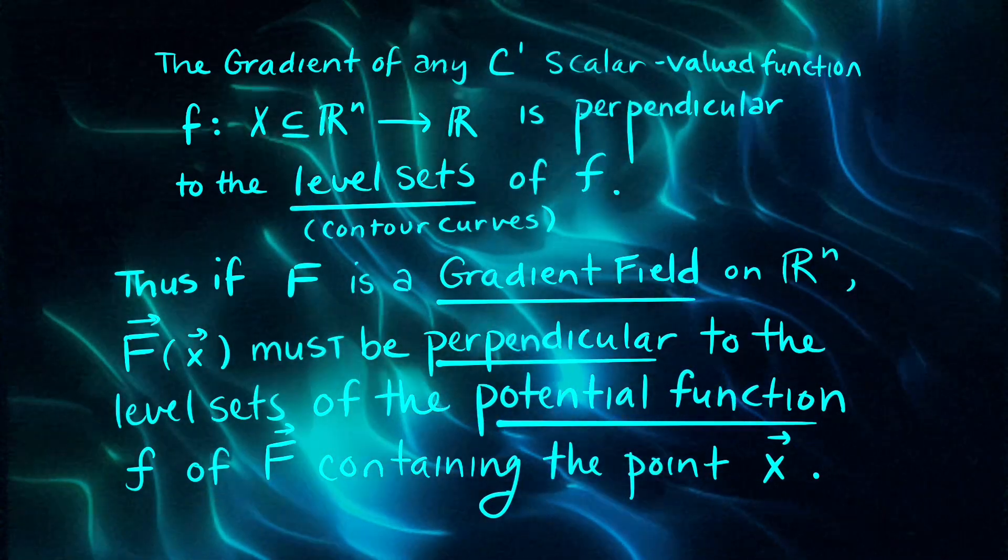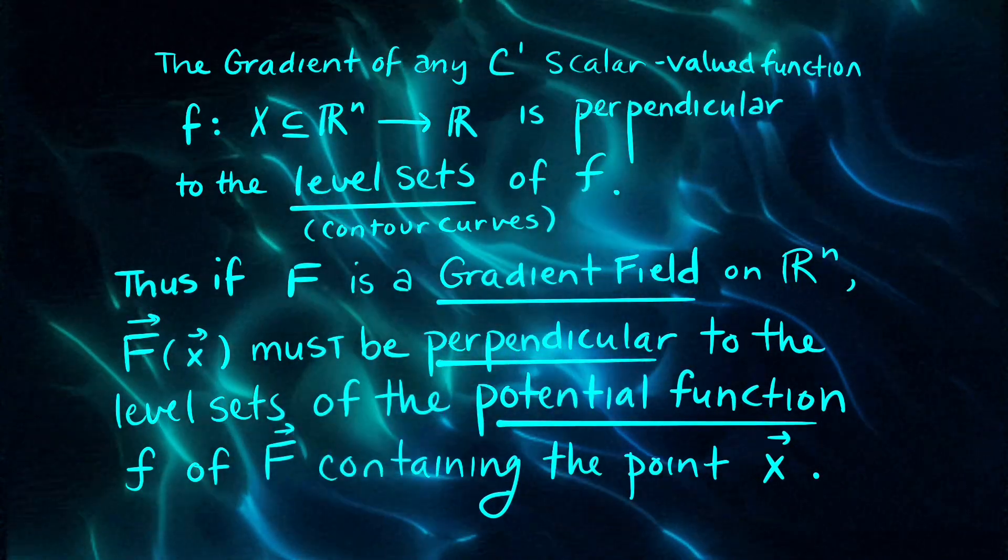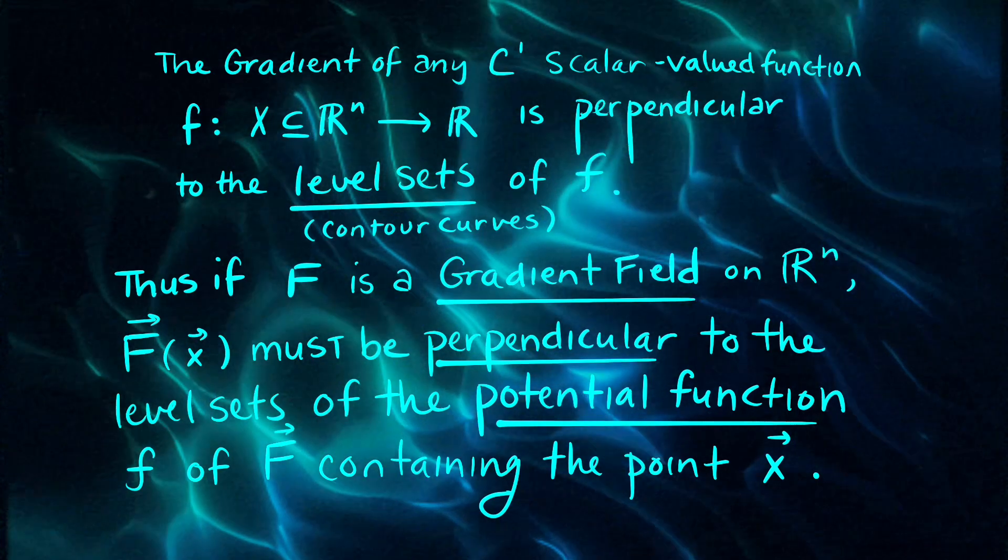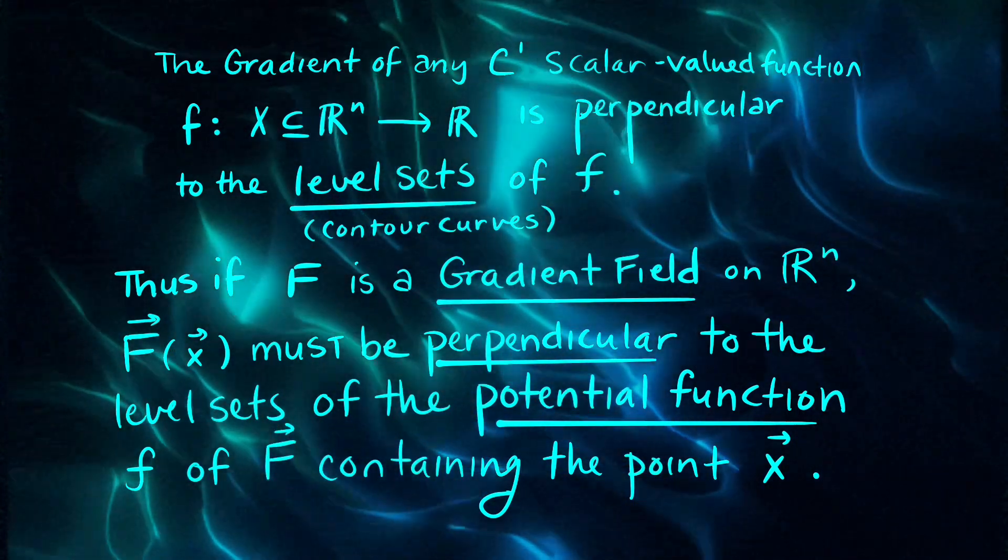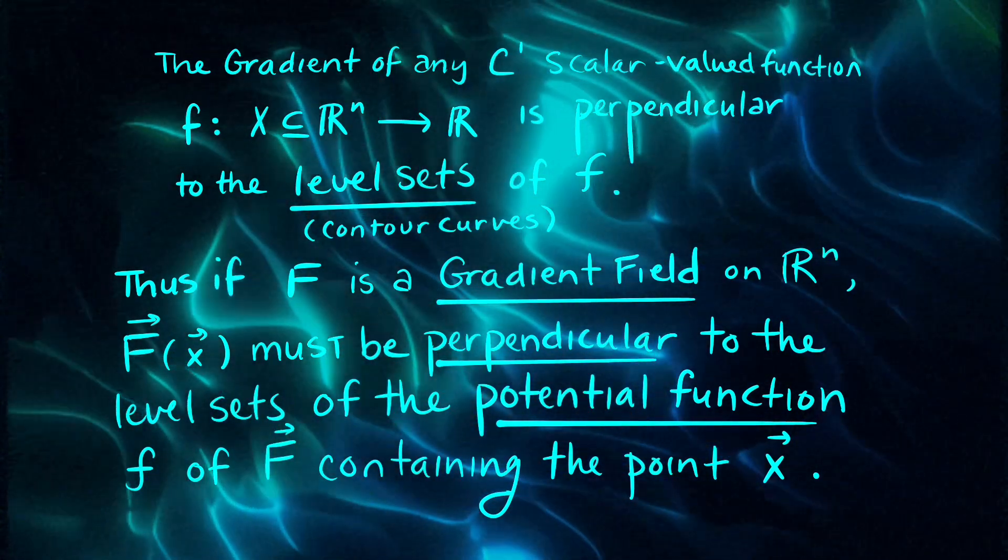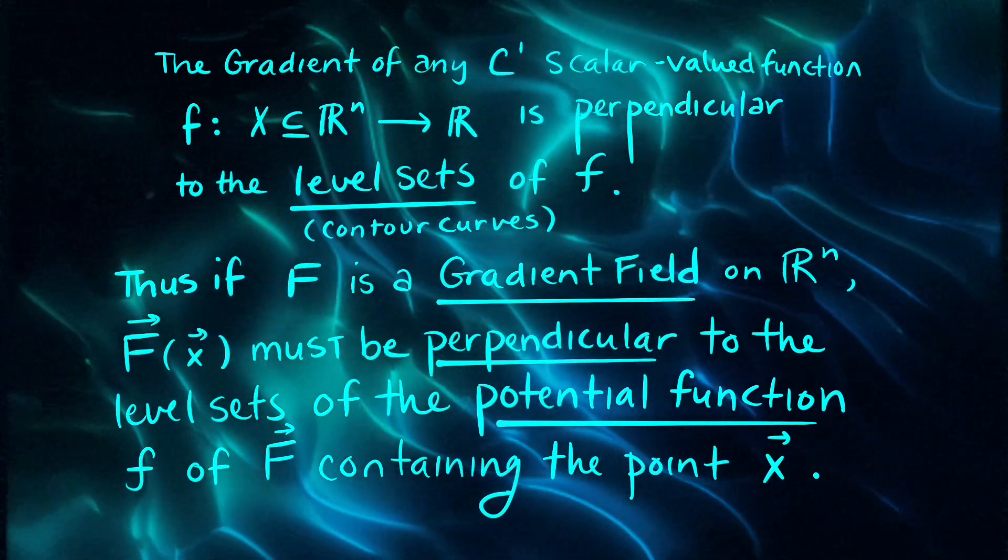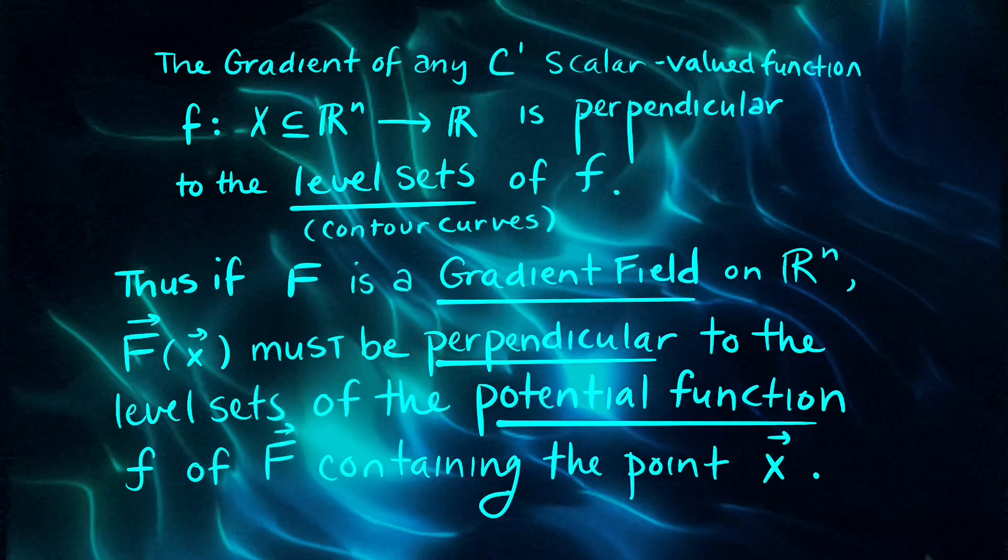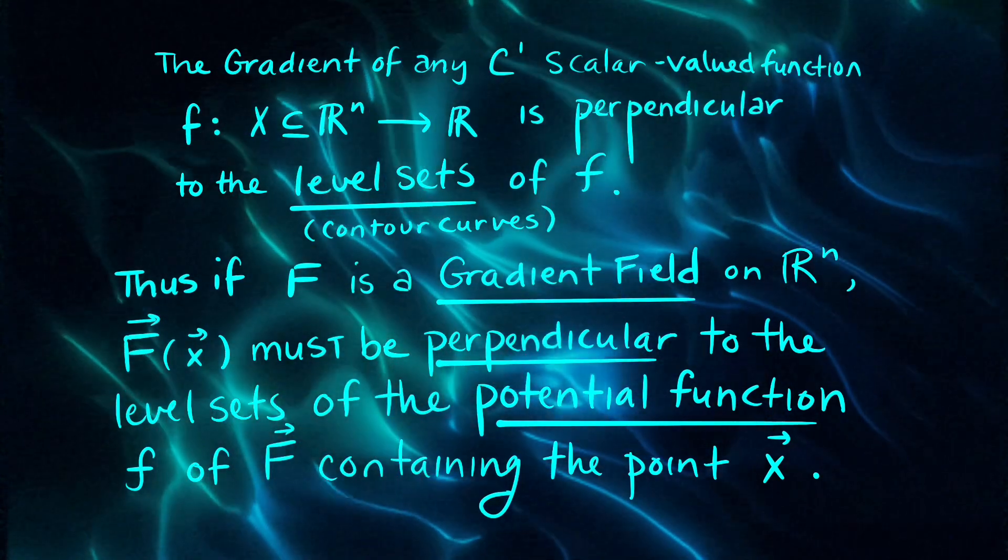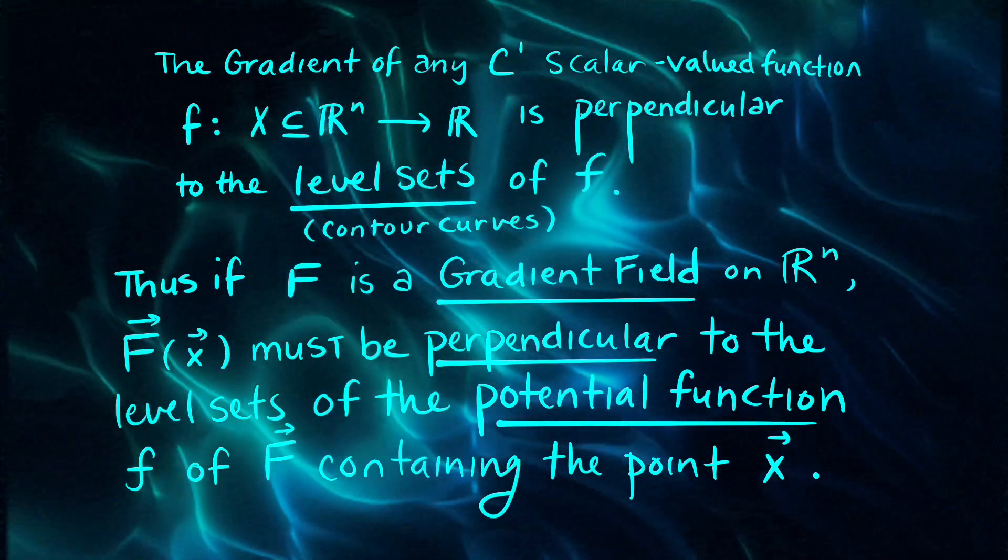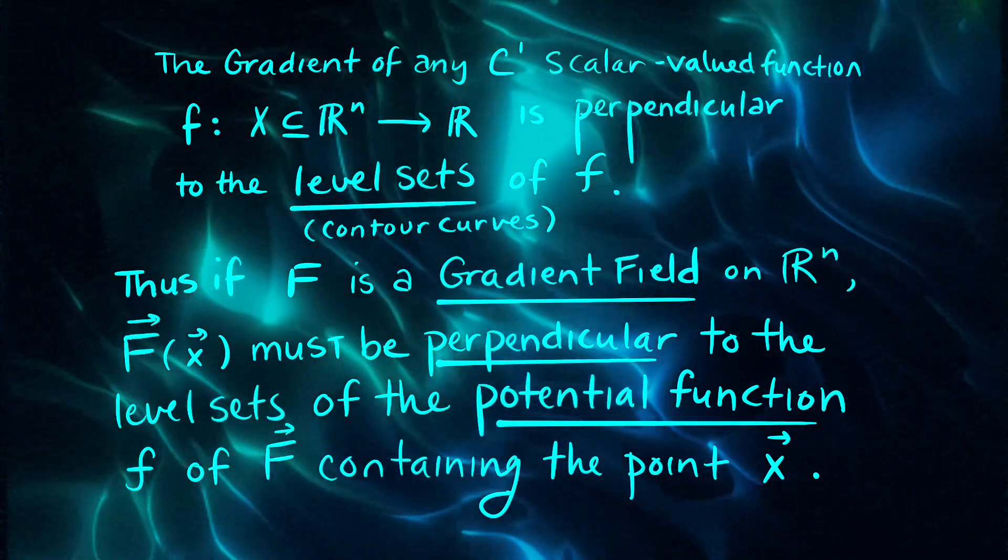The gradient of any C^1 scalar valued function f is perpendicular to the level sets of the function f. Thus, if capital F is a gradient field on the vector space R^n, F must be perpendicular to those level sets of the potential function little f of the vector field F containing the point x.